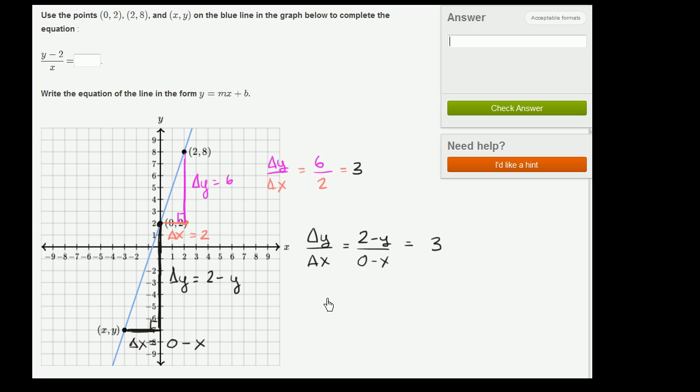You're saying, wait, Sal, that still doesn't answer my question. Even if I get this 0 out of the way, I could write 2 minus y equals negative x, or 2 minus y over negative x equals 3. But how does this get us this ratio right over here?